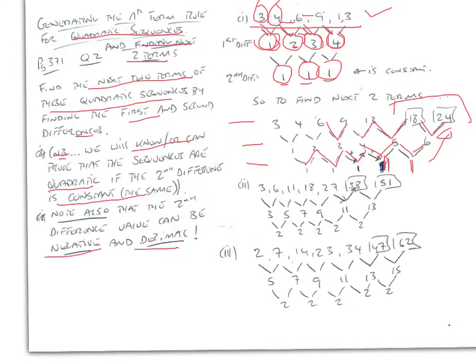For the sequence 3, 6, 11, 18, 27, the next two terms are found similarly. The second difference is 2 throughout, so the next first differences are 11 and 13, giving terms 38 and 51. For the sequence 2, 7, 14, 23, 34: first differences are 5, 7, 9, 11, and second differences are all 2.